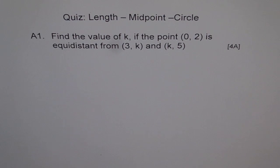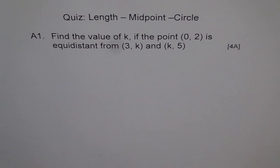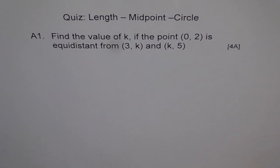Find the value of k if the point (0,2) is equidistant from (3,k) and (k,5). Try to do the problem on your own. Stop the video meanwhile. Once you are done, look into my solution. That will help you most.